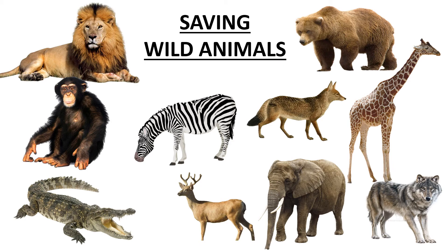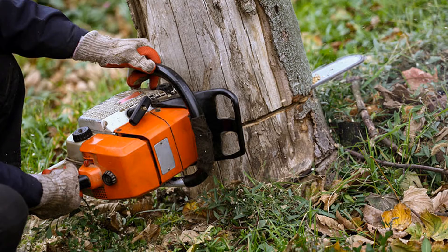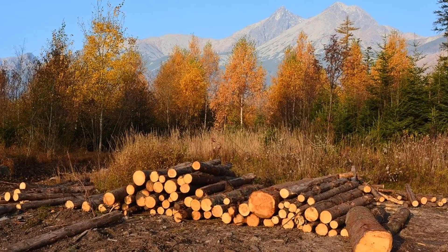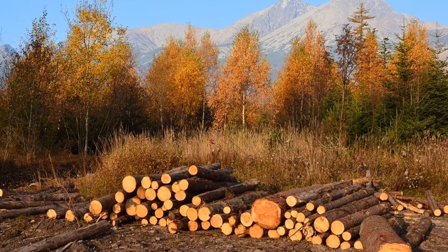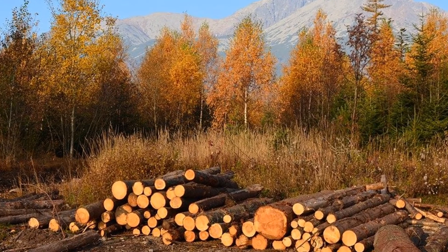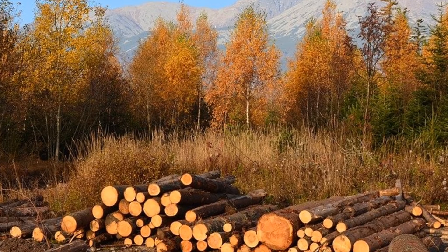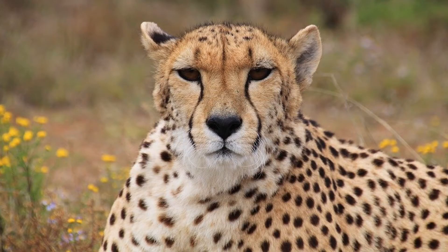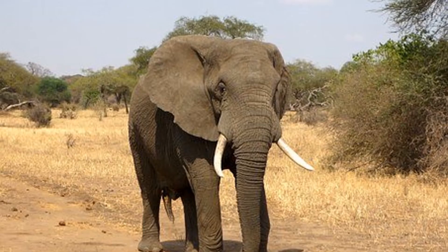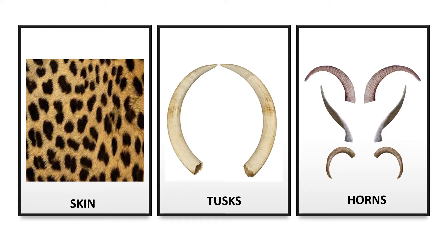Saving wild animals. Cutting down trees in forests destroys the homes of wild animals. Some wild animals are hunted and killed for their skin, horns, and tusks.